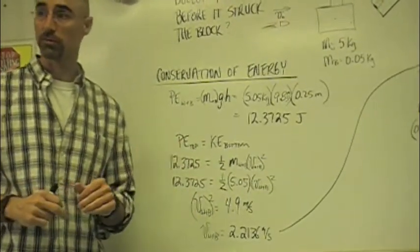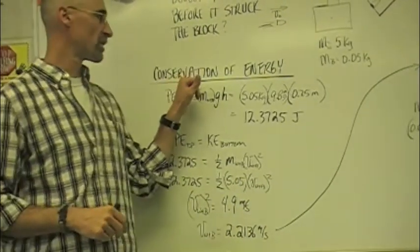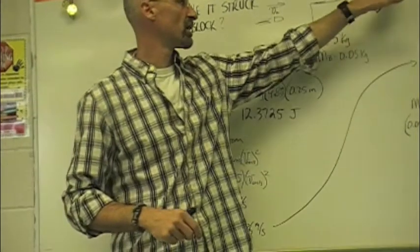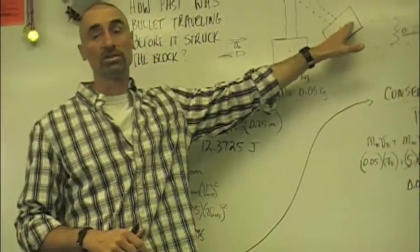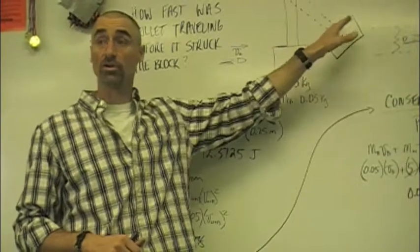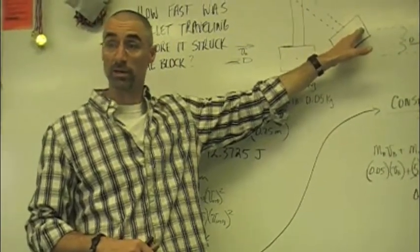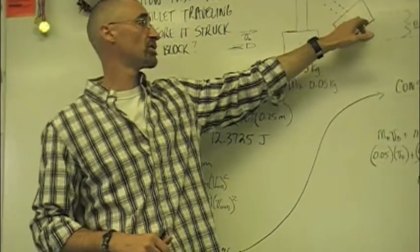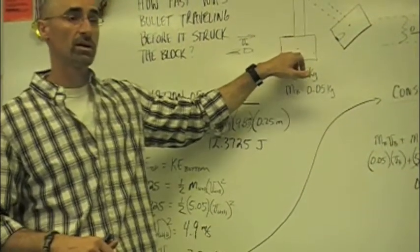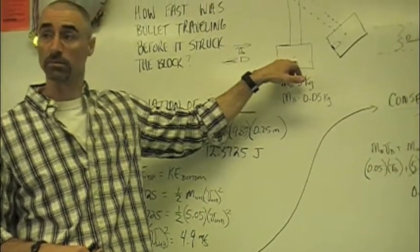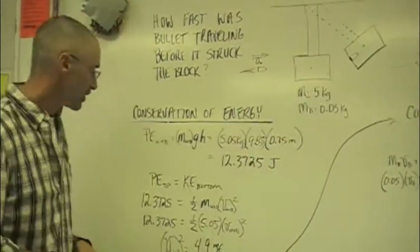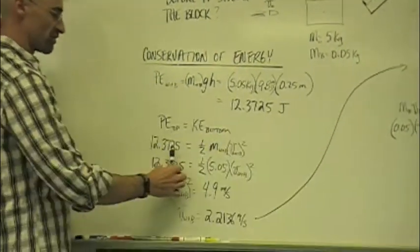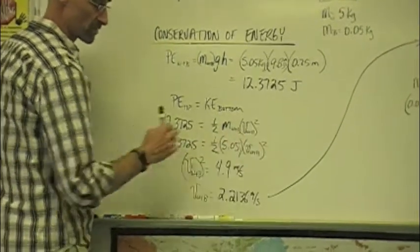That's just a potential energy problem. The principle of conservation of energy says that the amount of energy that it has up here in potential energy, well, what it says is the total energy here equals the total energy there. But since up here, the only kind of energy we have is potential, the potential energy at the top has to be equal to the amount of kinetic energy we had at the bottom. Does that make sense? Okay. So potential energy top, kinetic energy bottom, we take our 12.3725, set it equal to 1/2 MV squared. Now, you'll notice I put in the wood plus the block because we're talking about this system right here that's stuck together now.